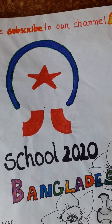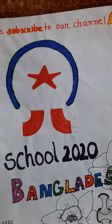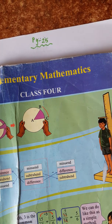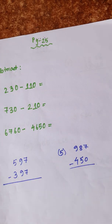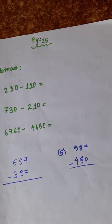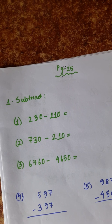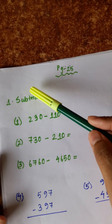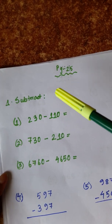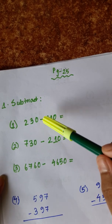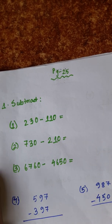Welcome to School 2020. Today I am in Class 4, Elementary Mathematics, Page number 25, Chapter 2. Maths — first topic is subtraction. See one number: 230 minus 110.